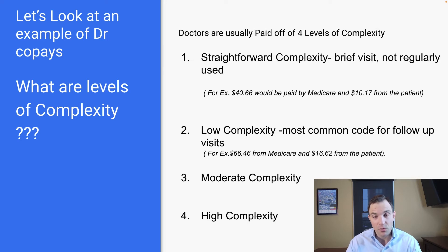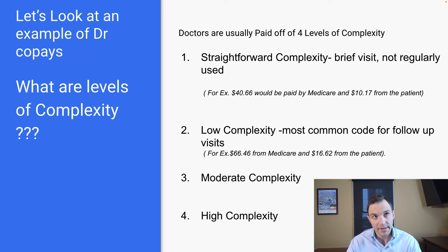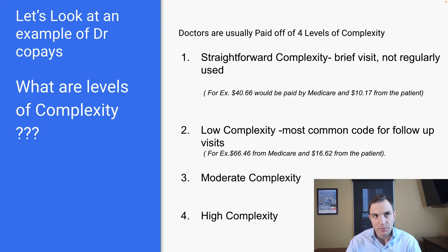The first level, straightforward complexity, is usually a brief visit and it's not regularly used by physicians. For that level, a physician might get paid around $50. Medicare would pay $40, and about $10.17 would be billed to the patient.